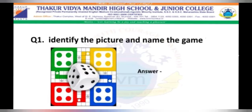Exercise 1, Question 1: Identify the picture and name the game. Let me give you a hint — this is an Indoor game. There are four colours on the board: blue, green, red, yellow. This game is played with a dice. Yes, the answer is Ludo.